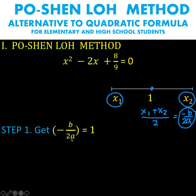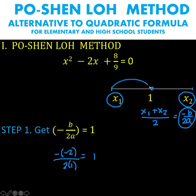Let's calculate negative b over 2a. Our b is negative 2, so negative of negative 2 over 2 times 1, which gives us a value of positive 1. So the coordinate of our midpoint is positive 1. Since 1 is at the midpoint, the distance from x sub 1 to 1 and the distance from 1 to x sub 2 must be the same. Let's call this distance u — we use u instead of d to avoid confusion with d for discriminant.